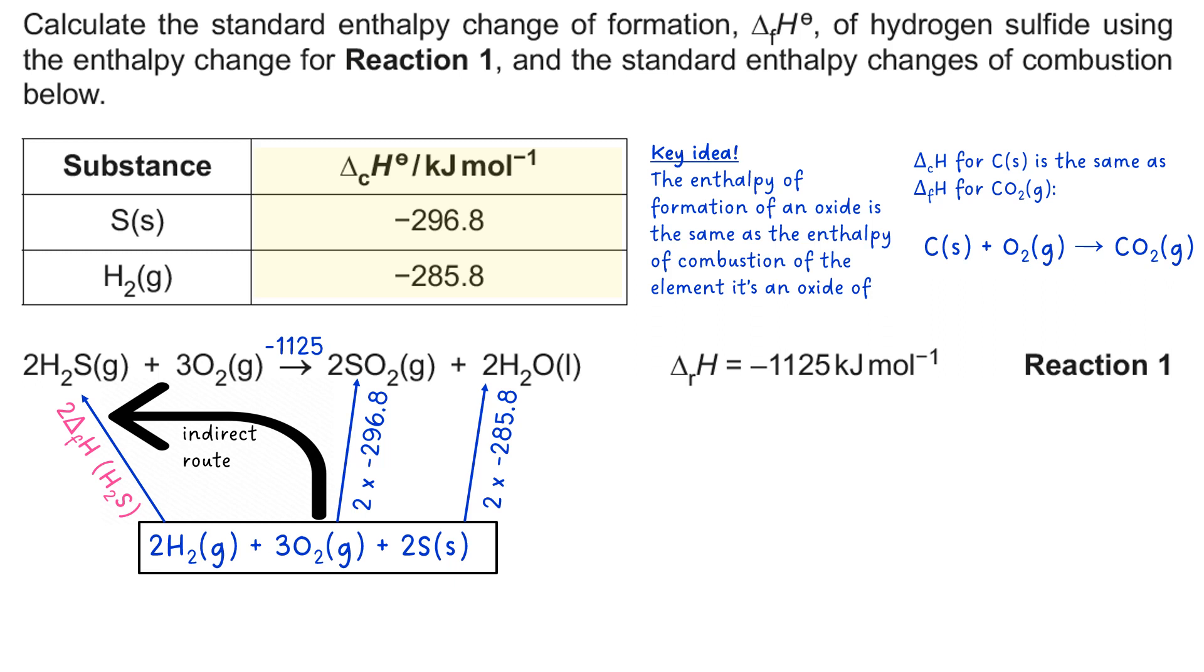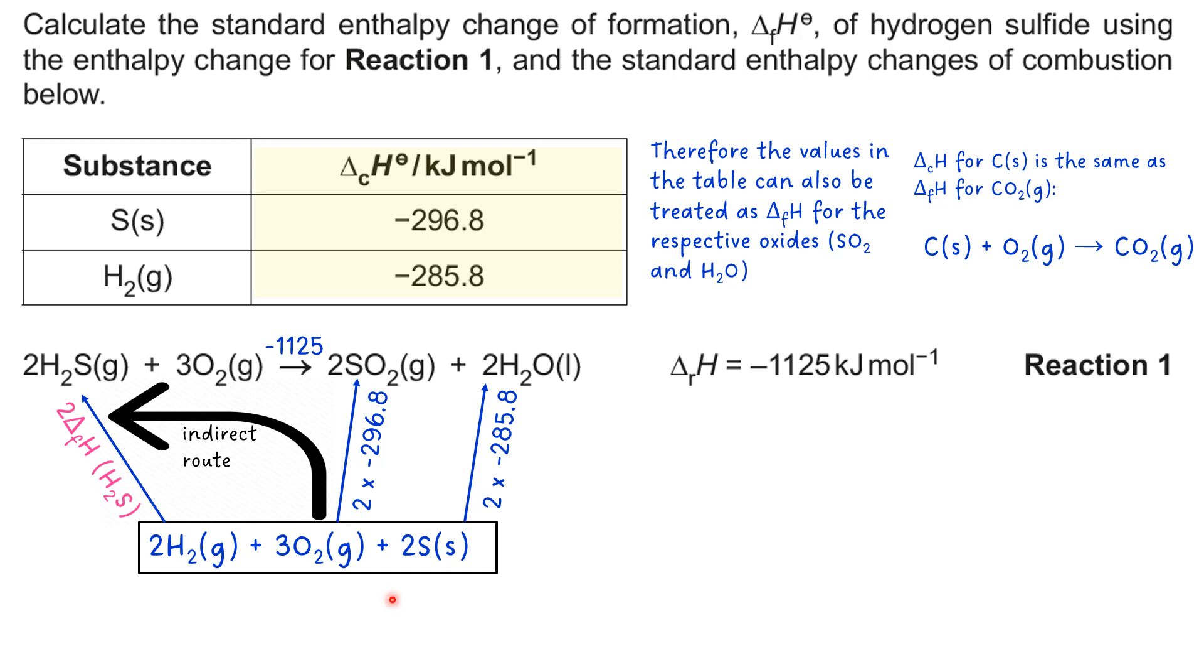In other words, taking an example, ΔcH for carbon is the same as the ΔfH for CO2, because the ΔfH for CO2 is the formation of one mole of the product or the substance in its standard state, or reactants and products in their standard states as well, which is what that formula equation represents. So what that means is we can treat the values in the table as ΔfH for the respective oxides SO2 and H2O, which is what we have in the equation that we're given. So once you've overcome that piece of deduction, it opens this up for you.